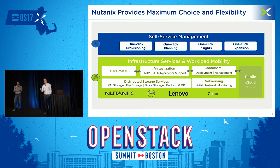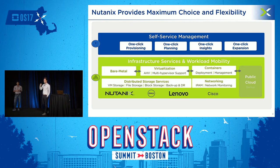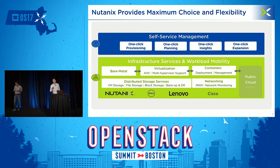Within the engine, you get an enterprise storage class fabric called the distributed storage service or distributed storage fabric. If you can name any enterprise class storage feature you have today in your data center, it is built inside Acropolis — things like data locality, data tiering for hybrid nodes, compression, deduplication, data recovery and backup. We also offer networking services as well as security services, all built inside the Acropolis piece.